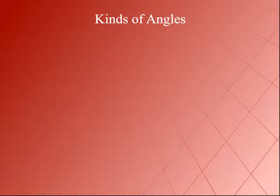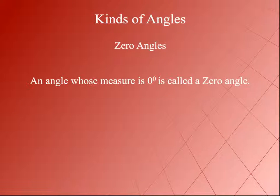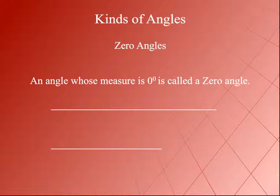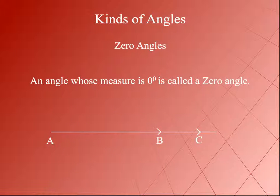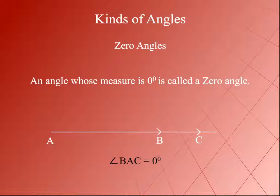Kinds of Angles. Zero Angle: An angle whose measure is 0 degrees is called a zero angle. When two rays or two line segments overlap each other, they form a zero angle at the endpoints. For example, rays AB and AC having a common initial point A and overlapping each other form a zero angle at A. Angle BAC is equal to 0 degrees.